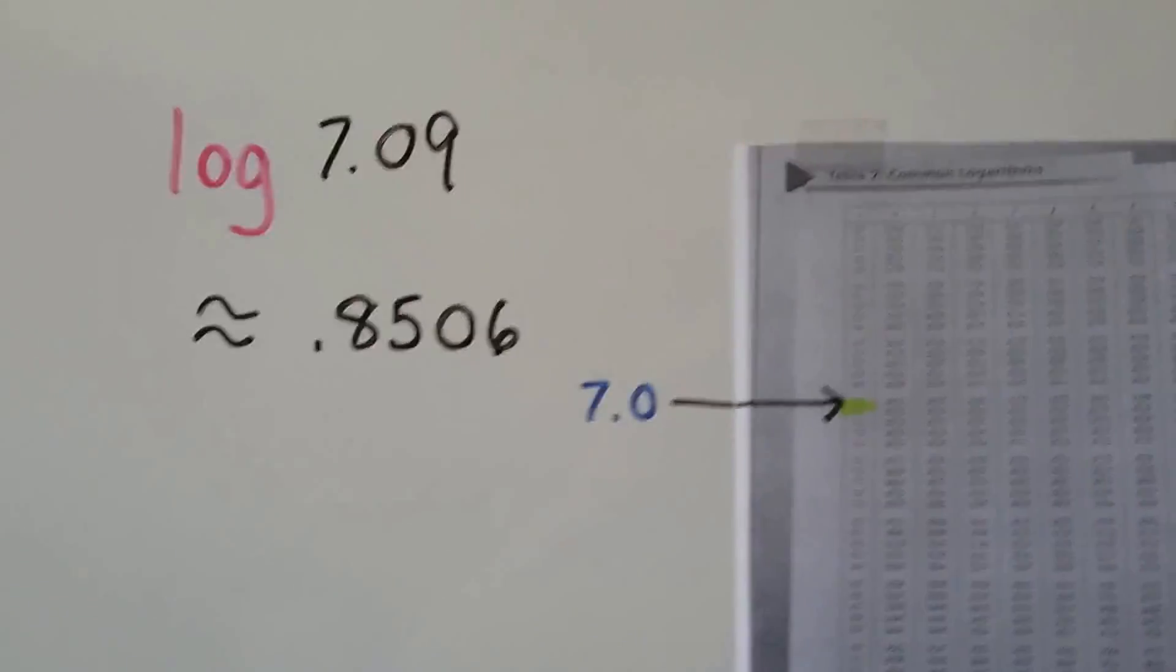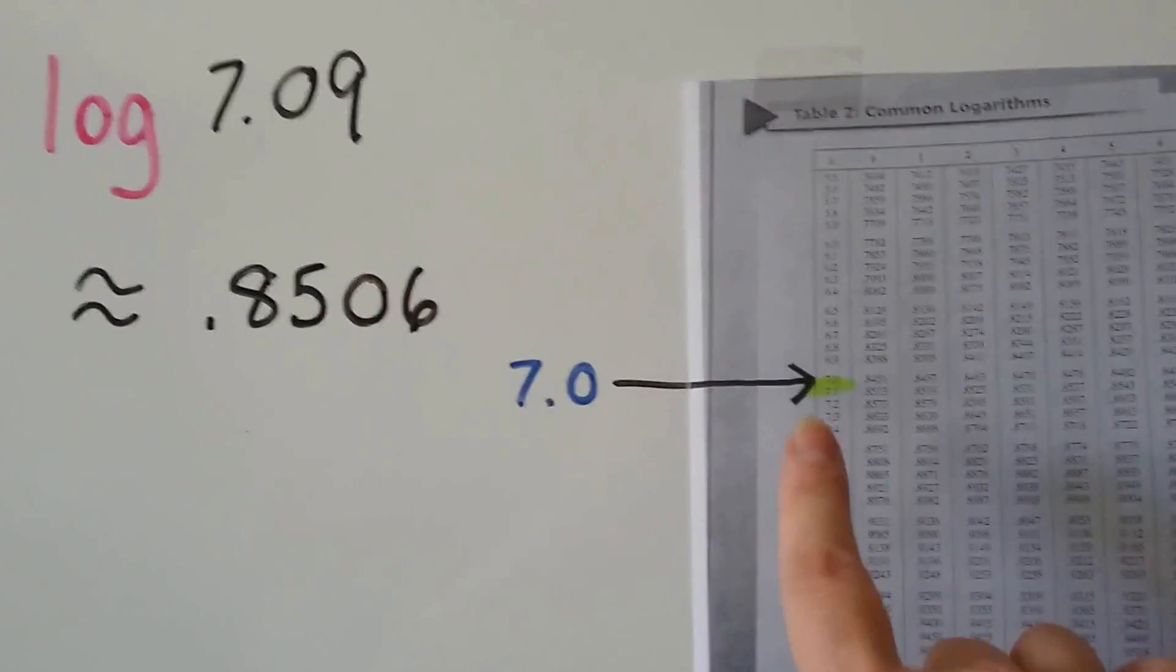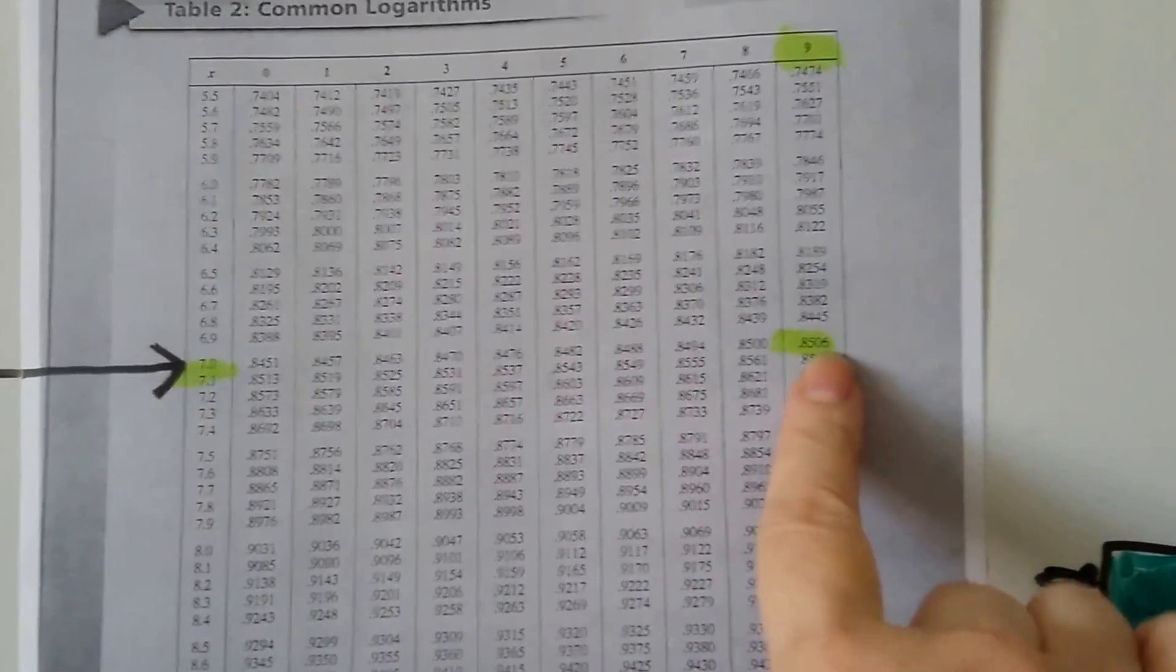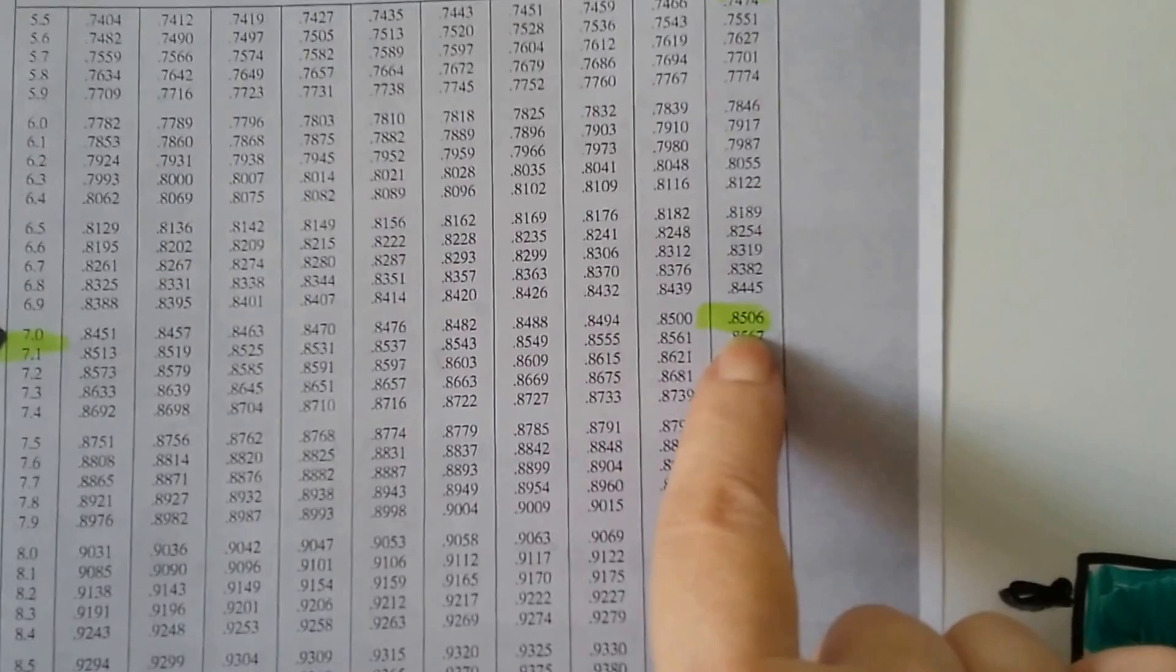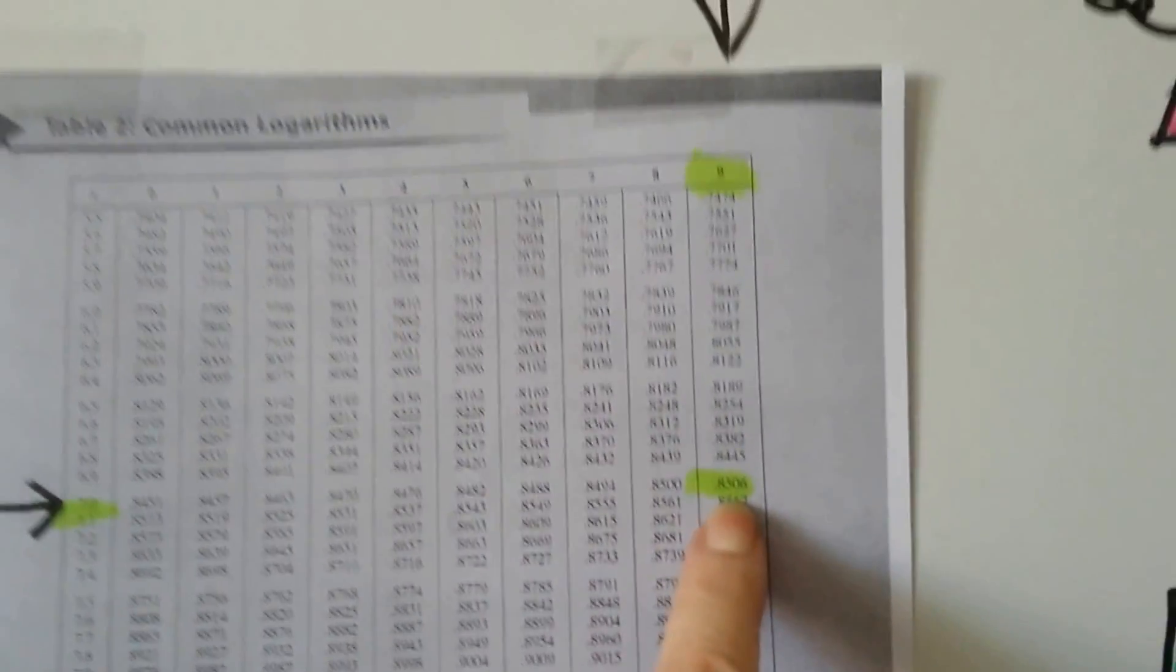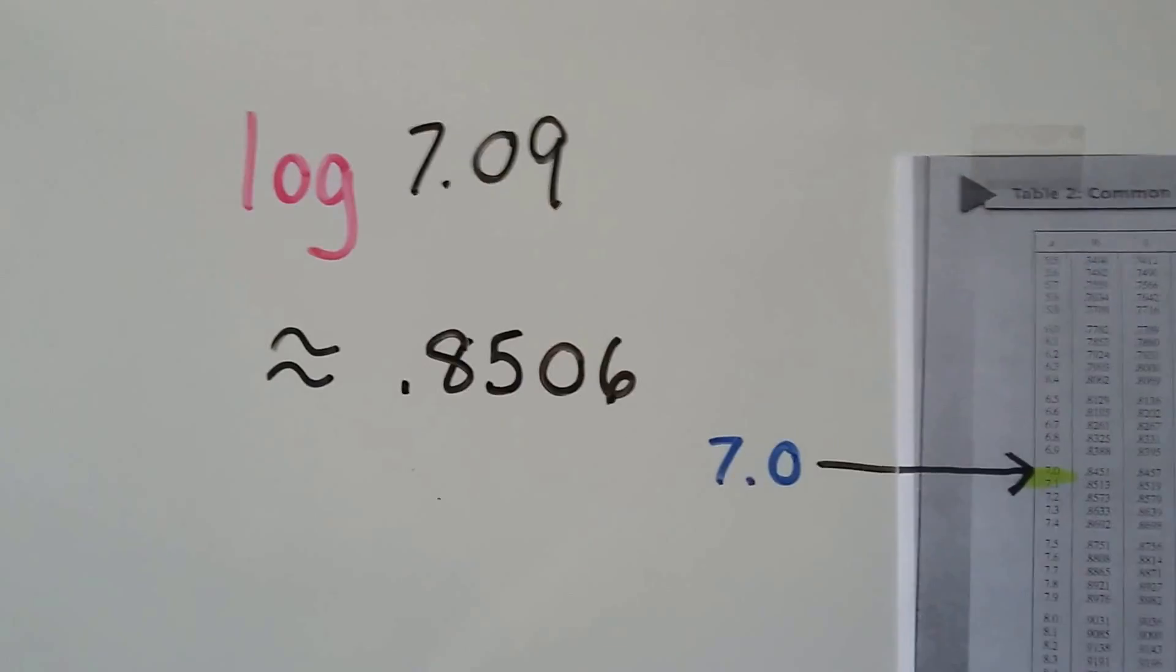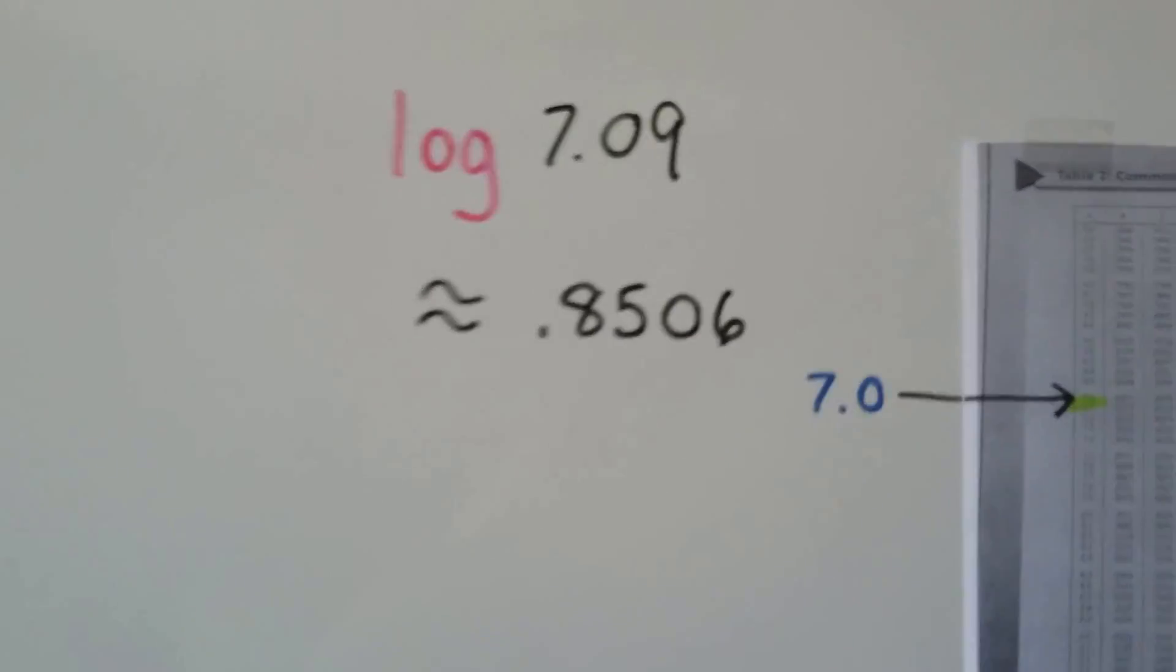We can do it again. We have log 7.09. We look for the 7.0 here and we take it across until we find the 9. We get 0.8506. It's approximately 0.8506.